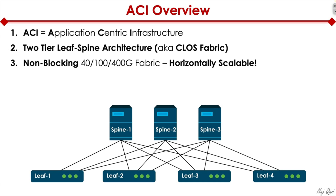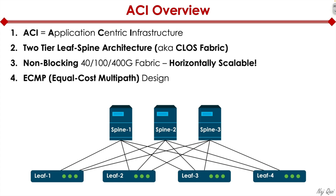You can keep adding leaf switches until the spines run out of capacity, and then you simply add another spine. By adding another spine, you gain the ability to add that many more leaves. Typically you would check with your vendor — in this case, Cisco documentation — to see how many leaf switches are supported per spine. Depending on the spine switch you're buying, that will tell you how many leaves are supported per spine. It's an important design concept to keep in mind.